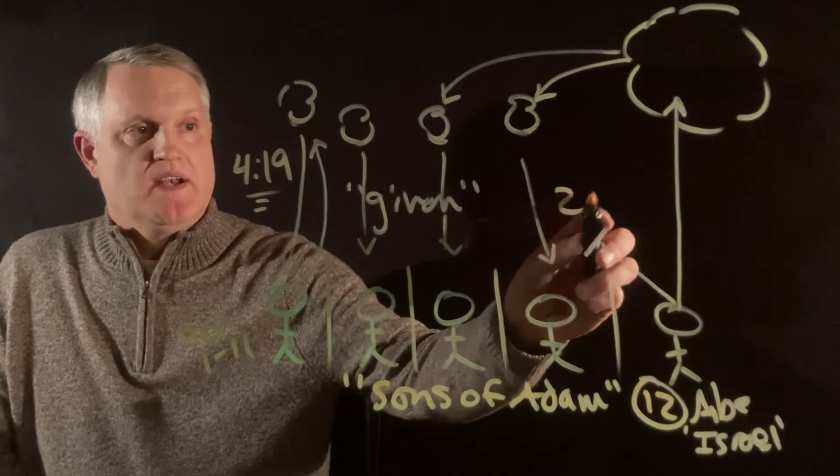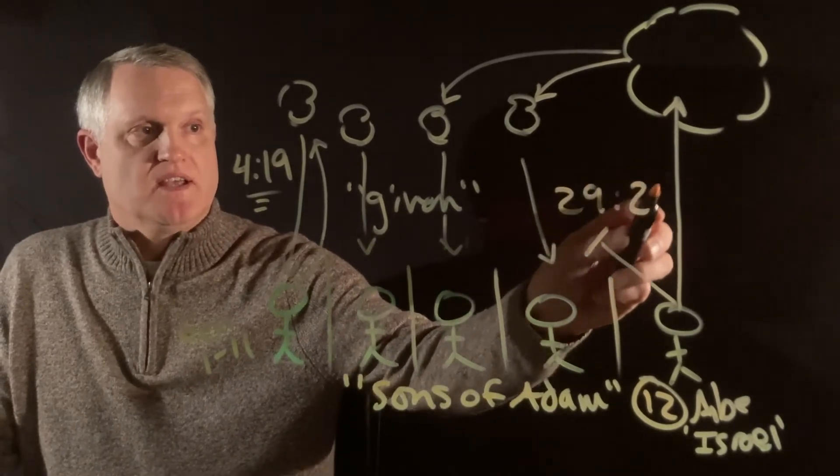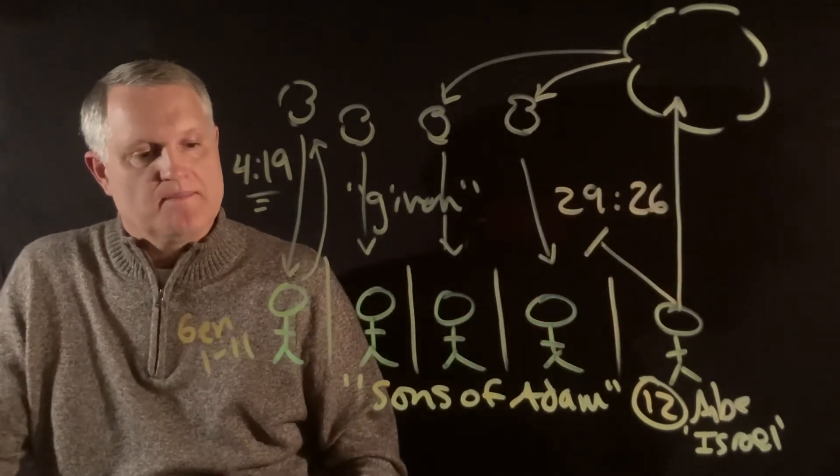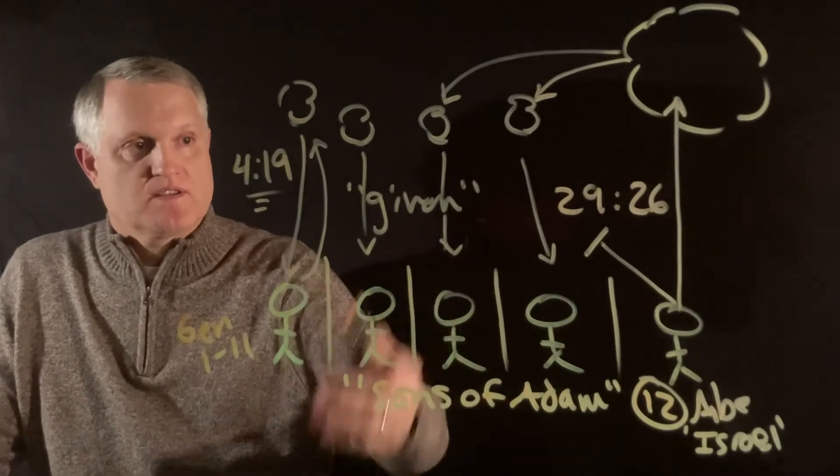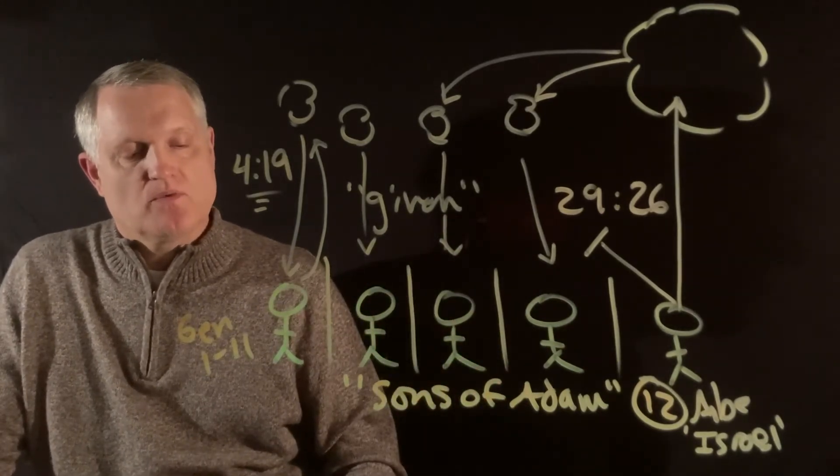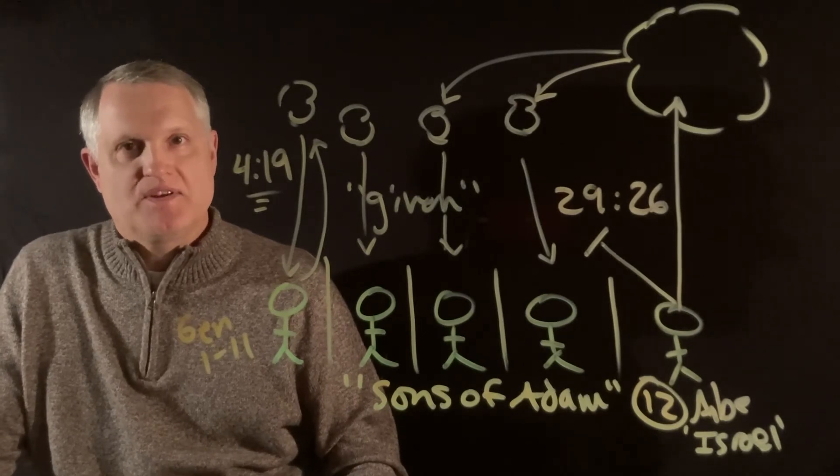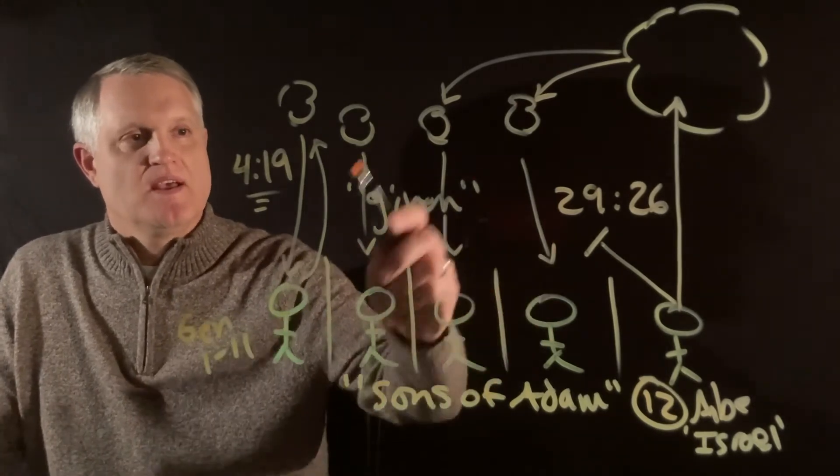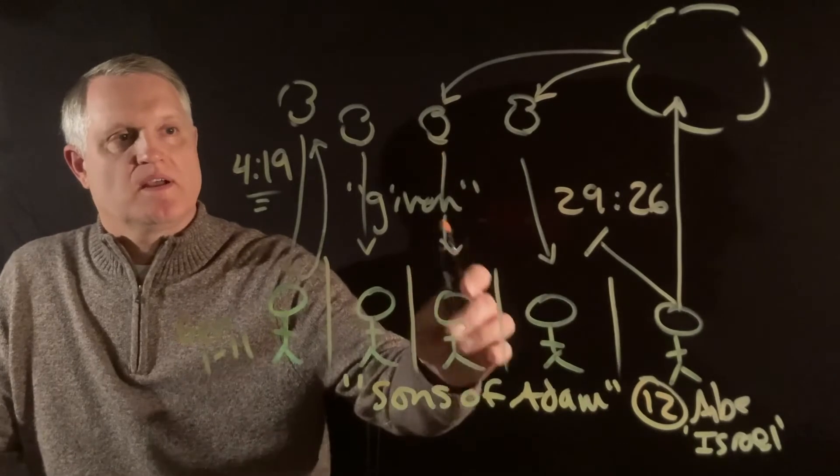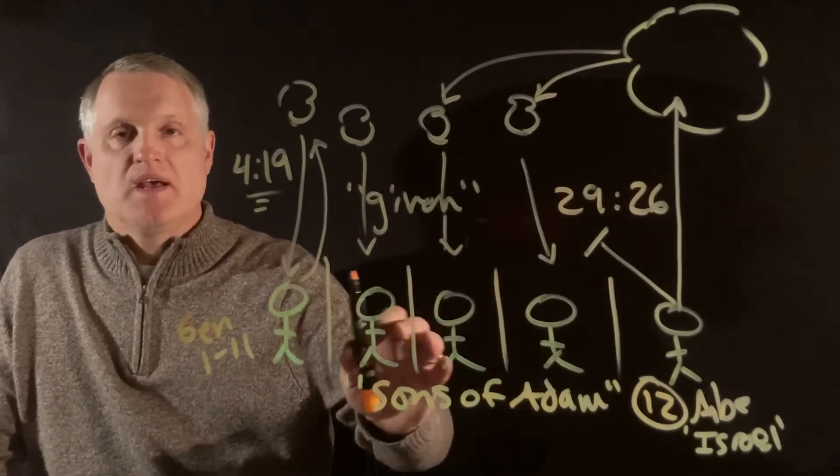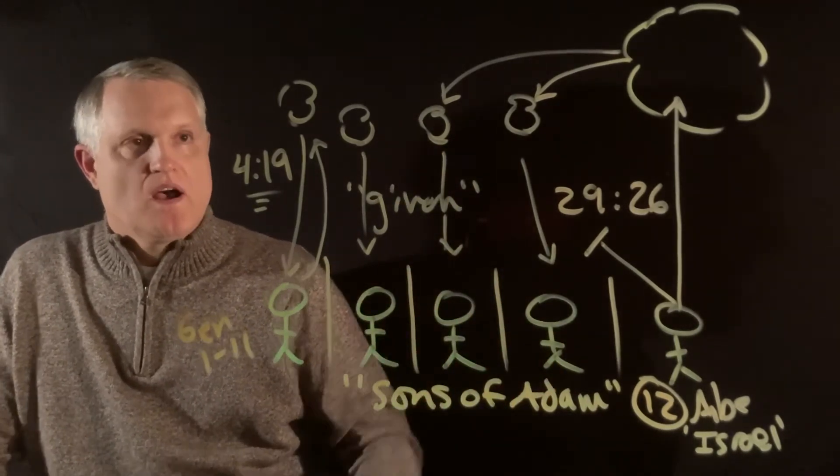But then when we come to 29:26, in Deuteronomy, he mentions it this way: Israel will, he predicts the future, Moses does, they will worship other gods, which they did not know, and which Yahweh had not given to them. He restates that idea that they will worship gods that were given to other people, not to Israel.